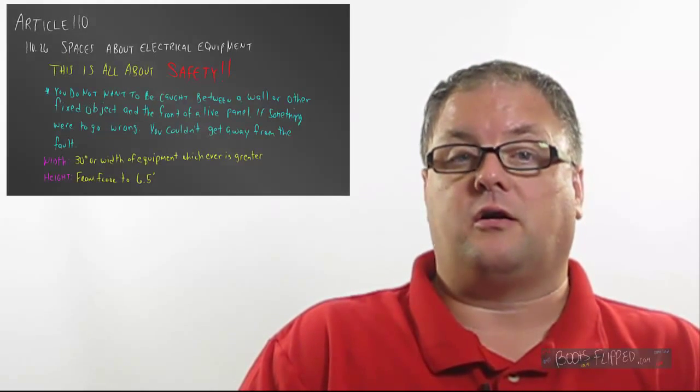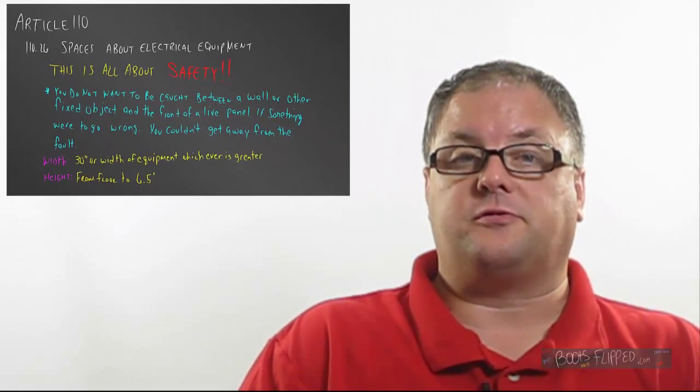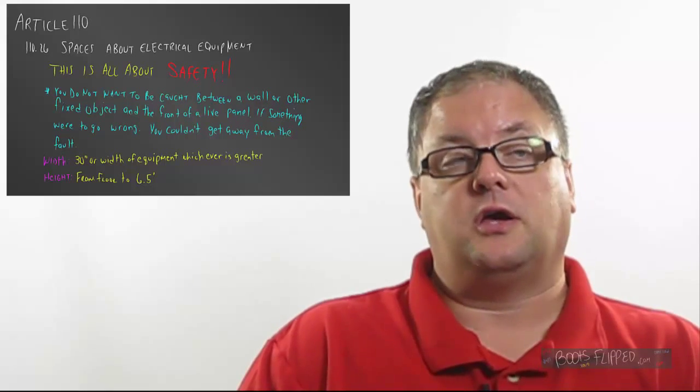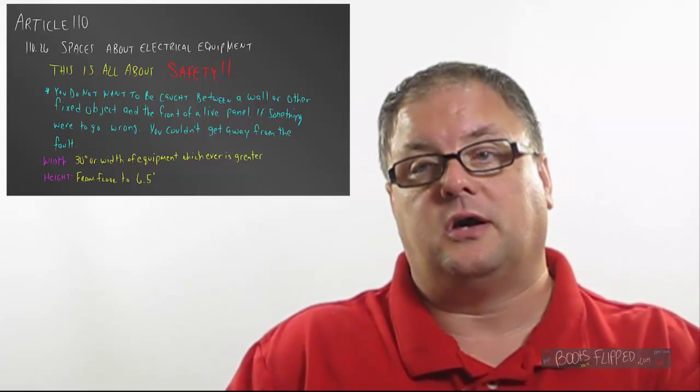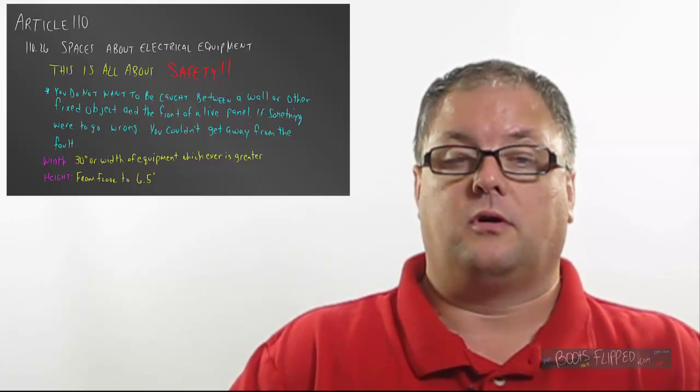Well, we're going to jump a few articles here and go on to Article 110.26, which is Spaces About Our Electrical Equipment. This article is all about safety. And the reason that it's about safety is because we don't want to be caught up between a panel and a wall or some other fixed object if something were to go wrong. So it gives us space requirements. One of the spaces is going to be the width. So 30 inches or however wide the equipment is, whichever is greater. Now, the 30 inches don't start from the center of the panel. It can be from the left panel or the left side and then over to the right side 30 inches. It can be from the right side over to the left side 30 inches. It could be just offset of the center. It really doesn't matter as long as you have 30 inches in width or the width of the equipment.